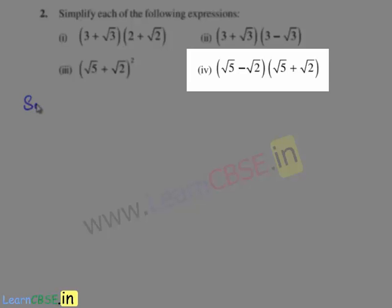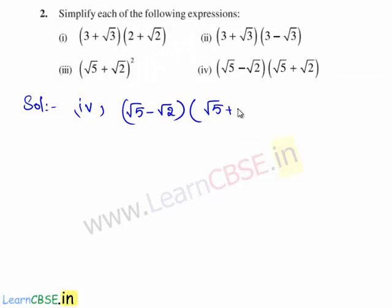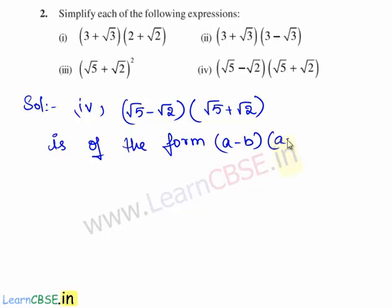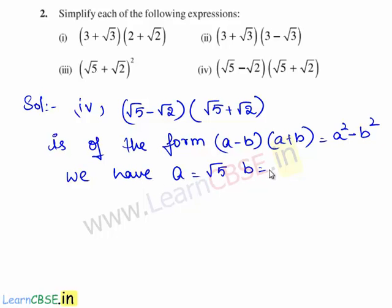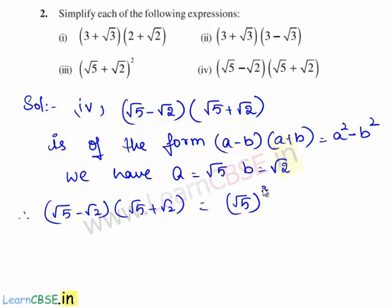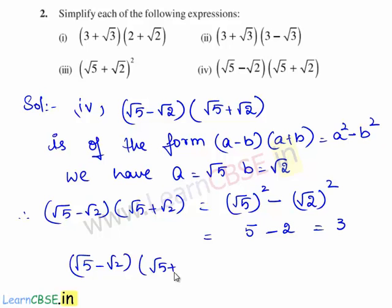Now let us move on to the fourth bit of the question. The fourth bit given is (root 5 minus root 2) times (root 5 plus root 2). This expression is of the form (a minus b) times (a plus b), which is equal to a squared minus b squared. On comparing, we have a equal to root 5 and b equal to root 2. Therefore (root 5 minus root 2) times (root 5 plus root 2) equals (root 5) squared minus (root 2) squared, which is 5 minus 2, equal to 3.